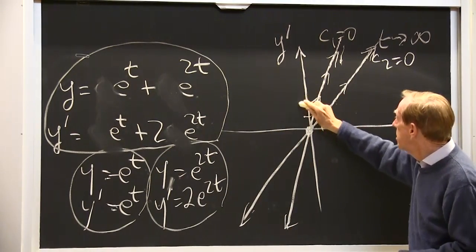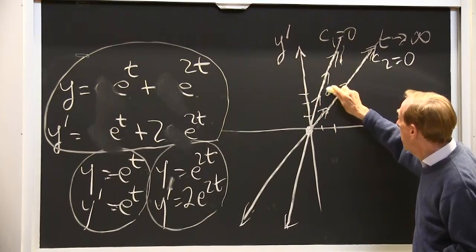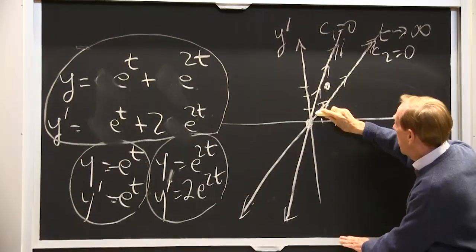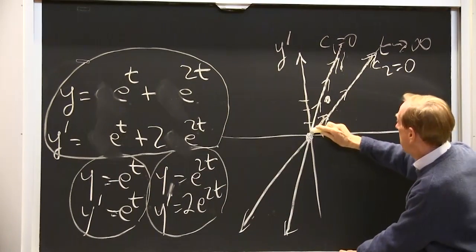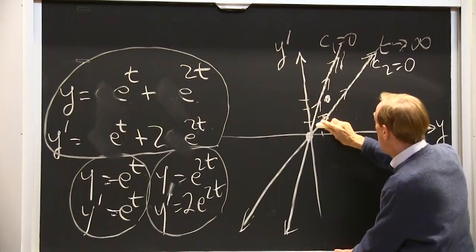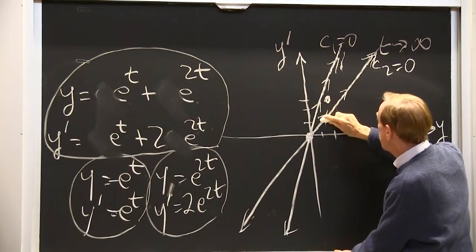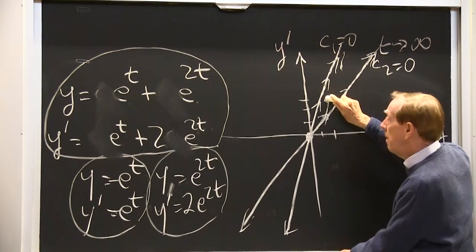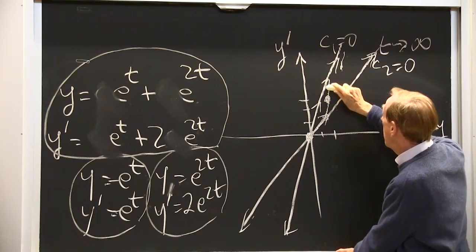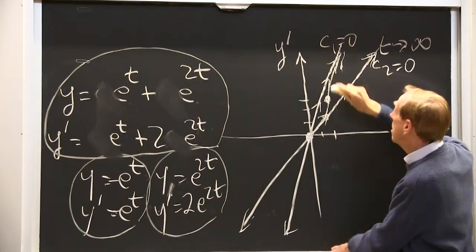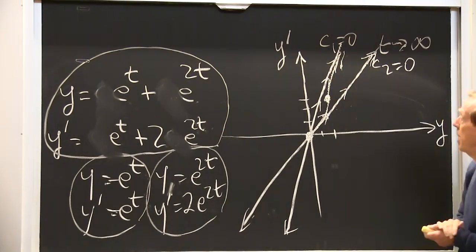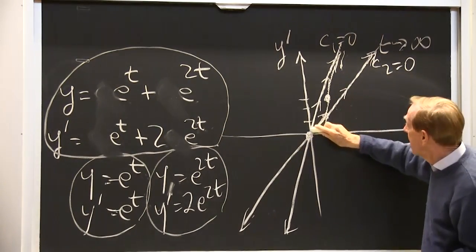So 1, 2, 1, 2, 3, somewhere in there. So you see the curve starts up along the line where e to the t is bigger. They have the same size at t equals 0, both equal 1. This is at t equals 0. Then for large times, this one wins. So I approach that line.